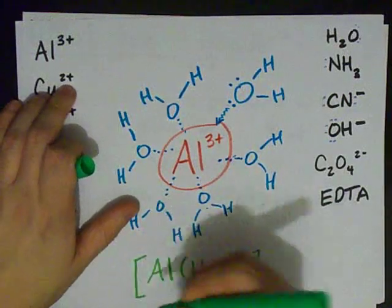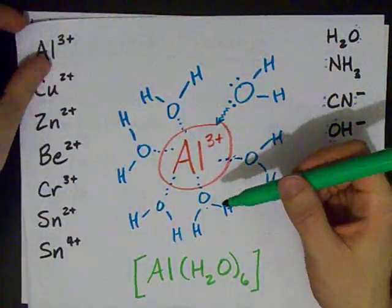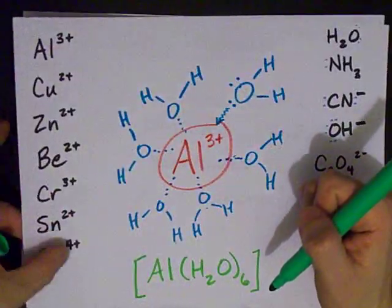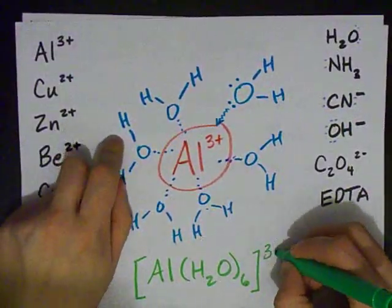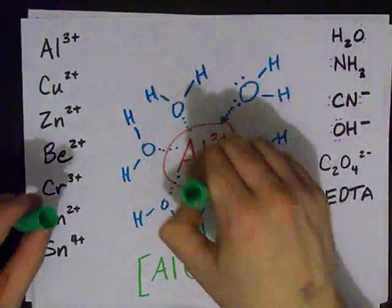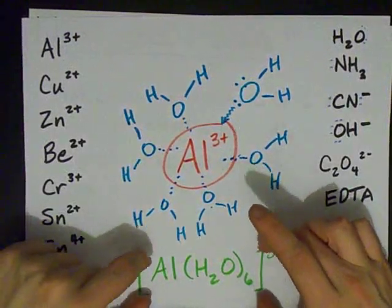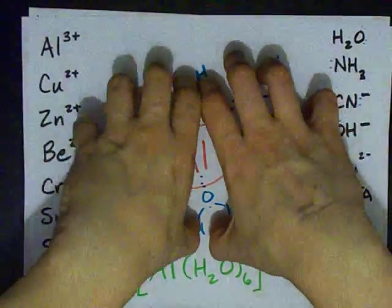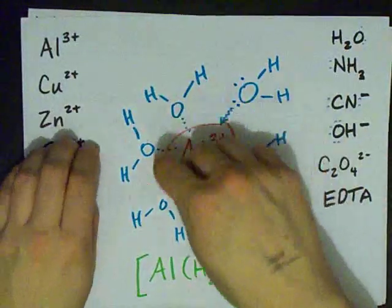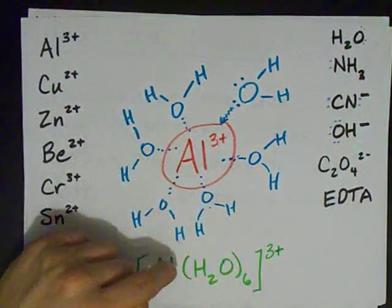Put it in square brackets to show that it's a complex or a positive charge center with ligands. And we put the remaining or resulting charge here. Here the charge hasn't changed because waters don't have charge. So this is the chemical formula for this, which is Al 3 plus and six water ligands. There's a special way to name these, but I'm not going to get into that right now.